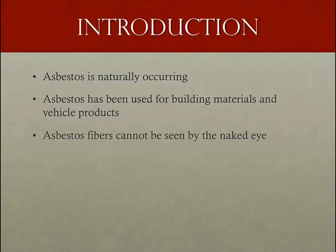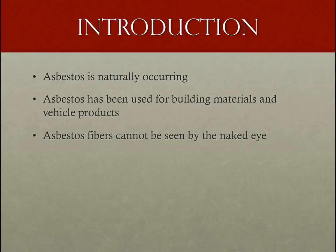Asbestos is a naturally occurring mineral fiber. It was used in numerous building materials and vehicle products for its strength and ability to resist heat and corrosion before its dangerous health effects were discovered. Individual asbestos fibers cannot be seen by the naked eye, which puts workers at an increased risk. The Occupational Safety and Health Administration, or OSHA, has regulations to protect workers from the hazards of asbestos.